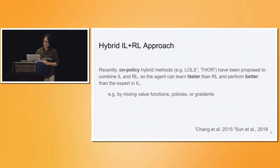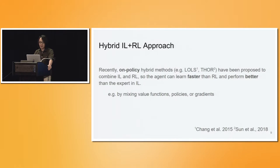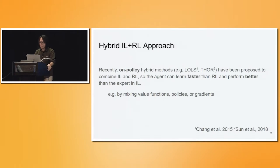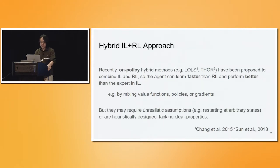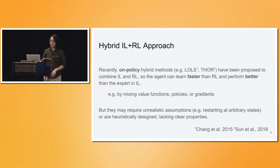To tackle this issue, several recent approaches try to make the hybrid method more on-policy — combining imitation learning and RL so that the learner can learn faster than RL but still surpass the suboptimal expert and eventually converge to something better. The way they do that is by mixing value functions, policies, or policy gradients from imitation learning and RL together. These algorithms have shown very impressive empirical results, but sometimes they require unrealistic assumptions — for example, requiring the system to be reset to any given state — and can be complicated engineering that we don't fully understand in a more general setup.